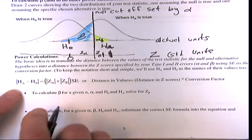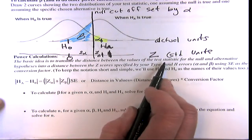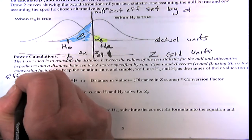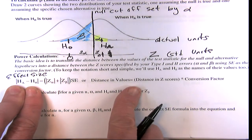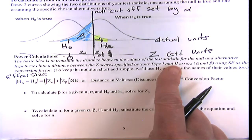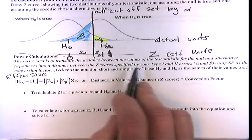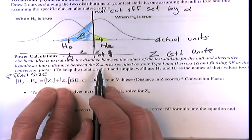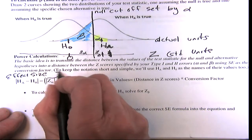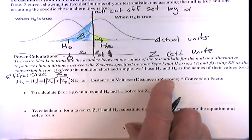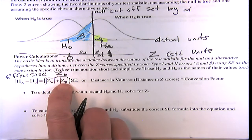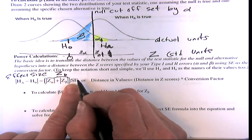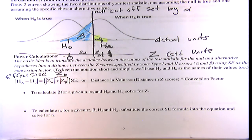Once you have z_D, step two is to find z_beta = z_D − z_alpha (using absolute values since we care about distances). Then step three: look up z_beta in the normal table to get the middle area, and from that get the tail — that tail area is beta, the Type 2 error probability. This is the basic procedure.